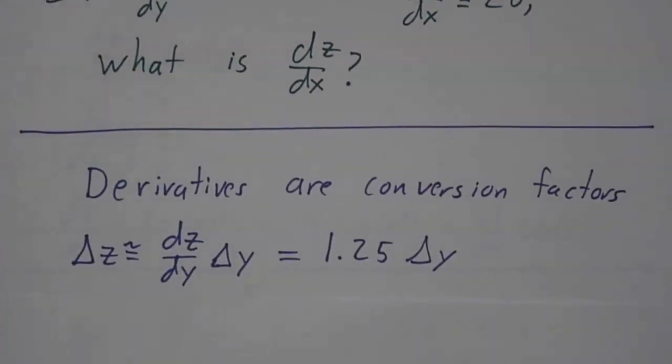I claim that you should think of these derivatives as conversion factors. If you change y a little bit, then how much does z change? Well, dz/dy times delta y is approximately delta z, because dz/dy was the limit of delta z over delta y. And so this is about 1.25 times delta y.